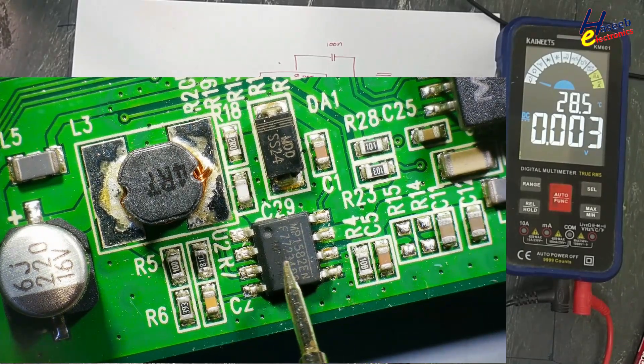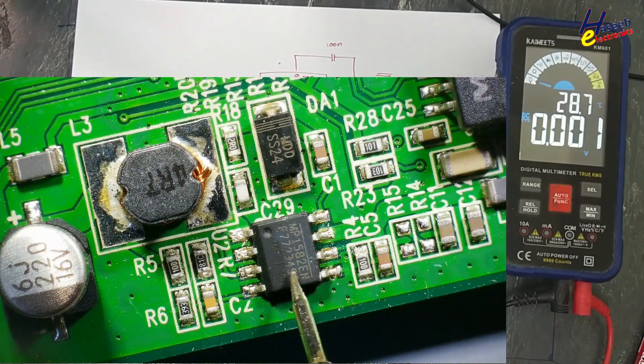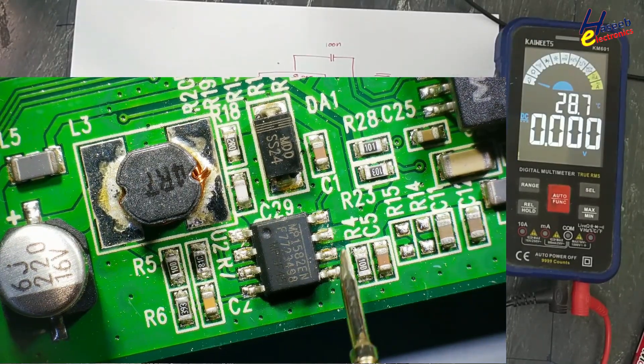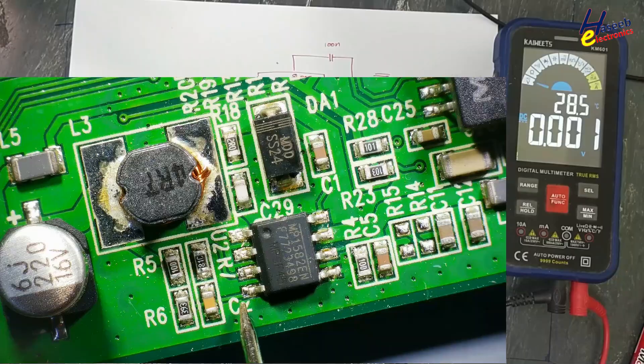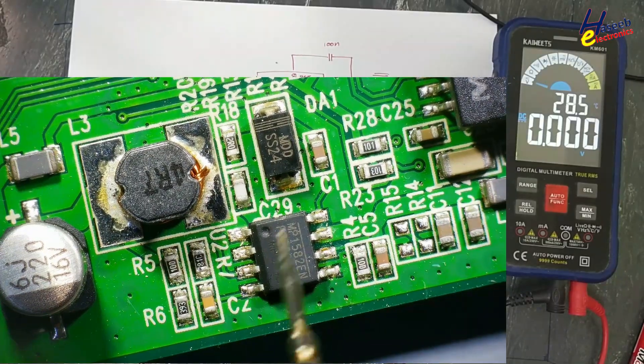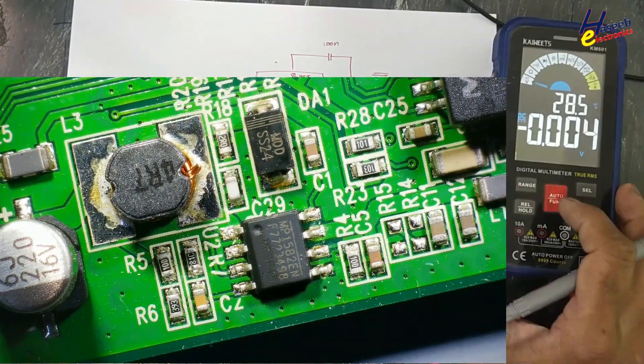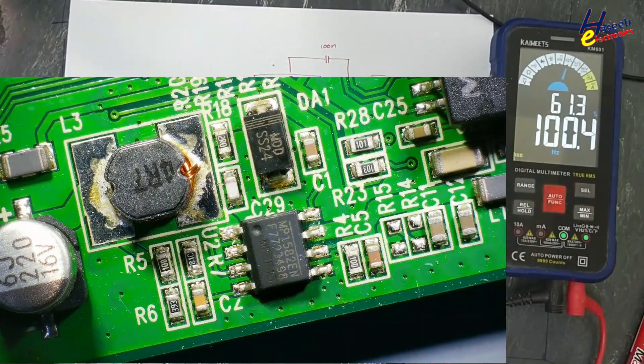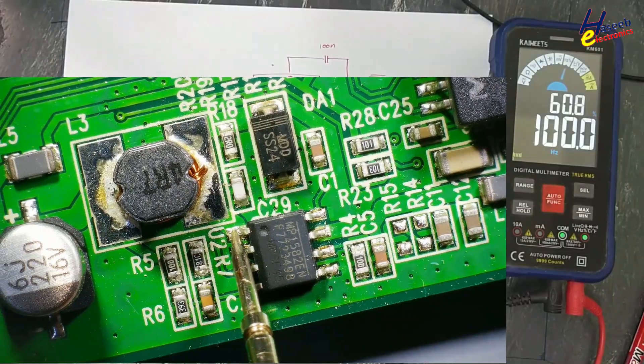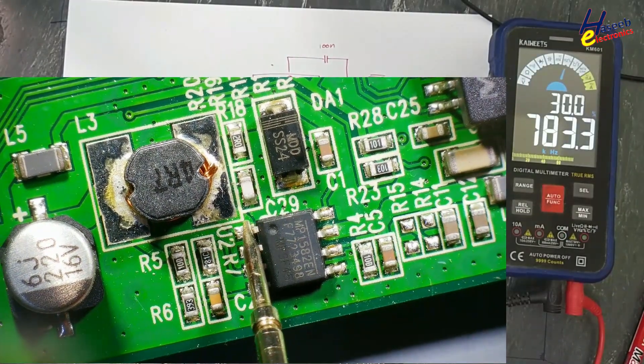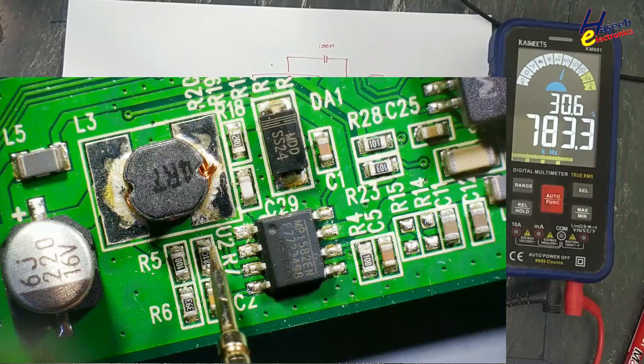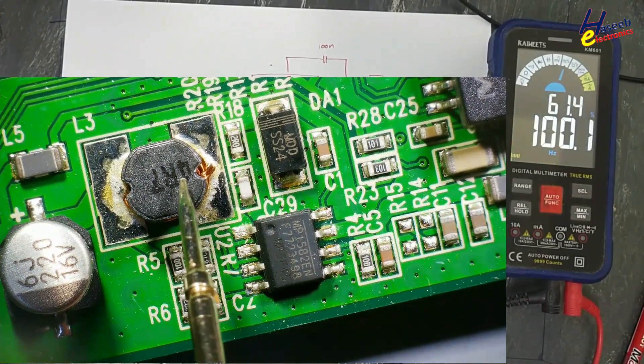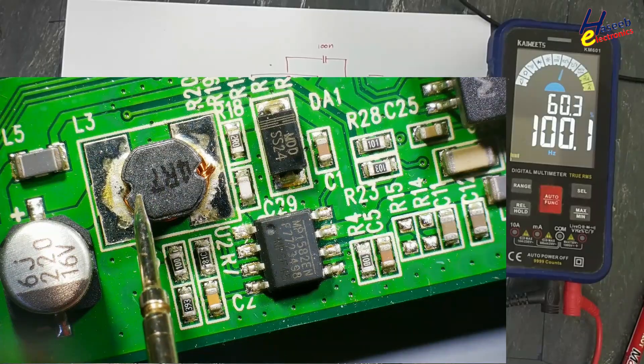When we have ground supply, frequency resistor, and enable pin, that time it will start switching. We will check it. We will check its frequency. 783 kilohertz. This time this IC is switching.